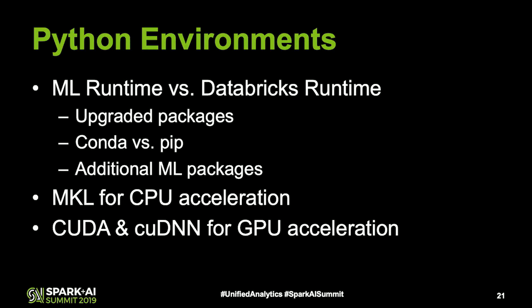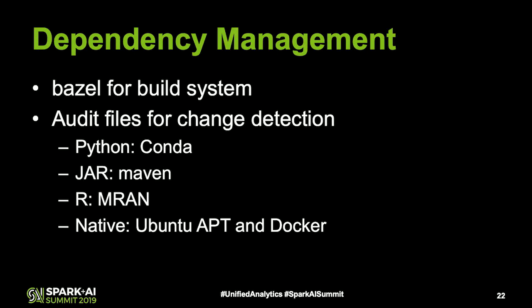It's not just Python — we have many other packages installed in ML Runtime. We've published blog posts explaining how we use Bazel for our build system, which ties all this package management together. Conda is used for Python; we install JARs using Maven. For R, we use nightly MRAN snapshots that Microsoft publishes to control exactly what version of an R package we're getting. For native packages, we use Ubuntu's APT system and Docker containers to control exactly what goes inside the Runtime.